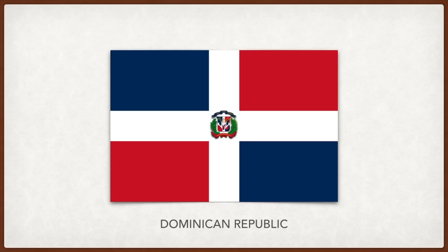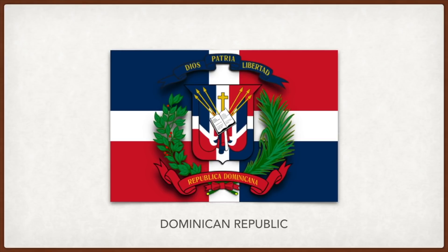Dominican Republic: blue on the flag stands for liberty, the white for salvation, the red for the blood of heroes. The coat of arms displays the country's motto 'God, Fatherland, and Liberty'; the Bible in the middle is open to John 8:32 — 'You will know the truth and the truth will make you free.'